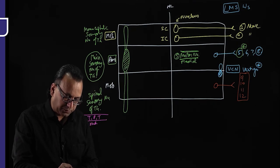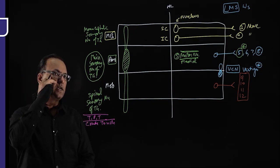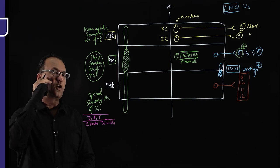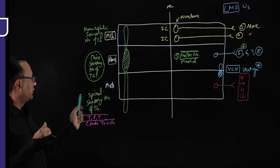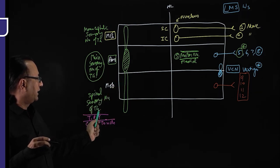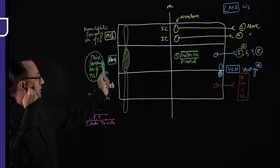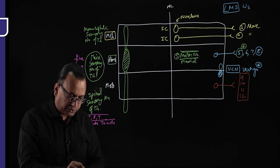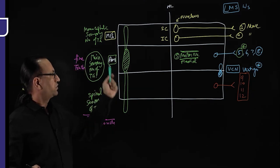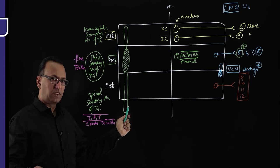Crude touch is sensation over a wide area, like touching with cotton, whereas fine touch is touching a very narrow area with a pencil tip. The spinal sensory nucleus of trigeminal receives crude touch, pain, and temperature. The main sensory nucleus of trigeminal receives fine touch and most other sensations, except crude touch, pain, temperature, and proprioception.